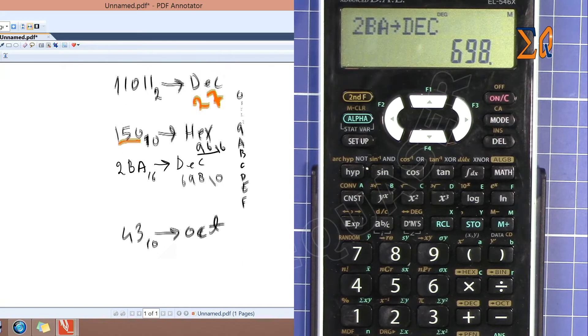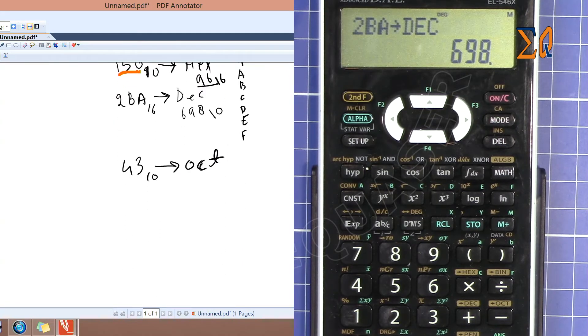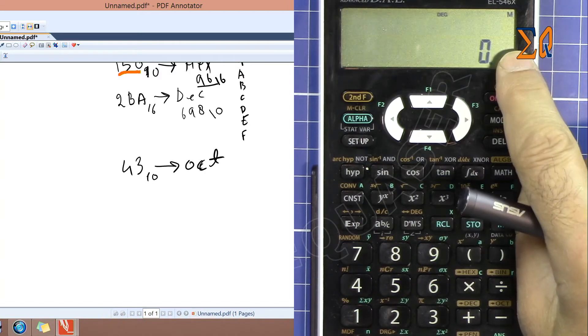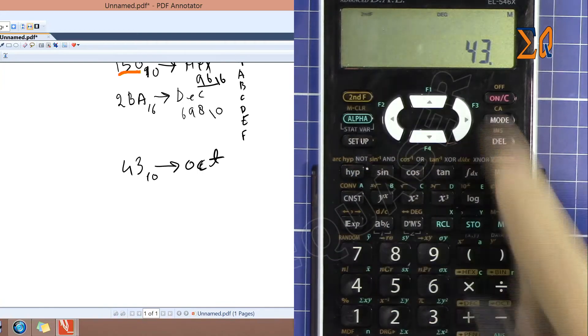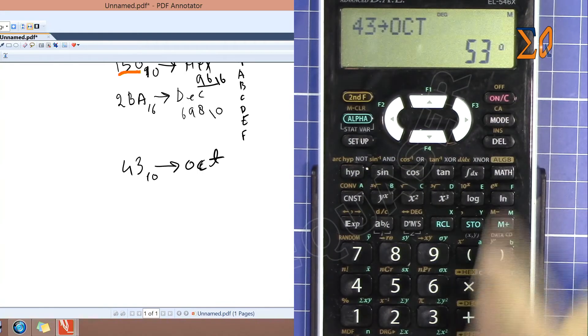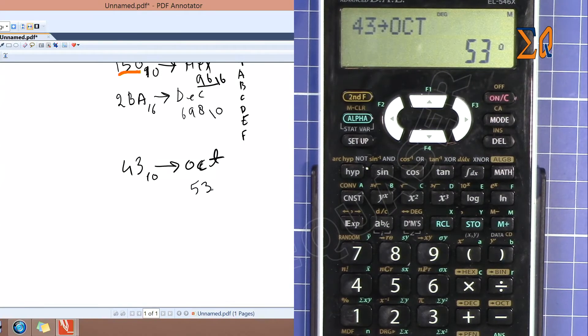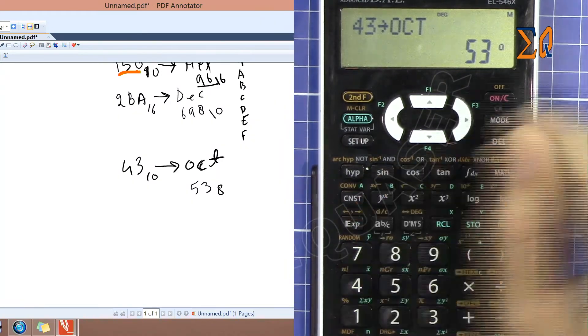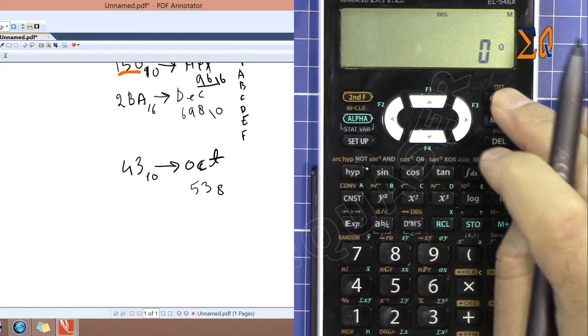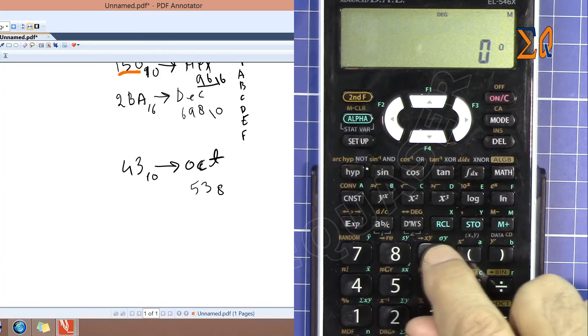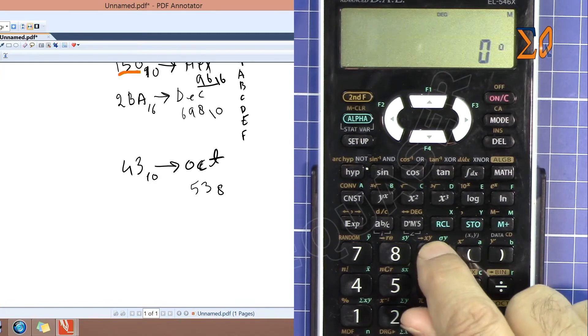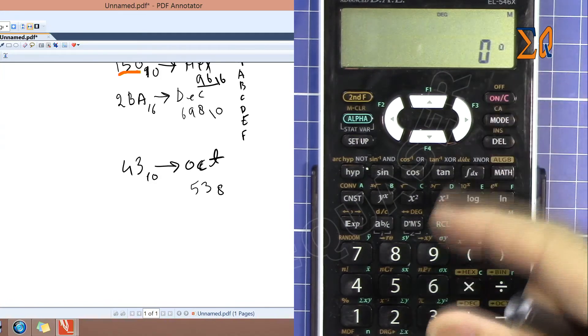So octal is base 8. Now let's convert 43 to octal. I have to be in decimal. So 43 and then second function, OCT octal. Now this is 53 base 8, that is octal. In octal we don't have 9. As you see, 9 is disabled because we are not allowed to have above 8.